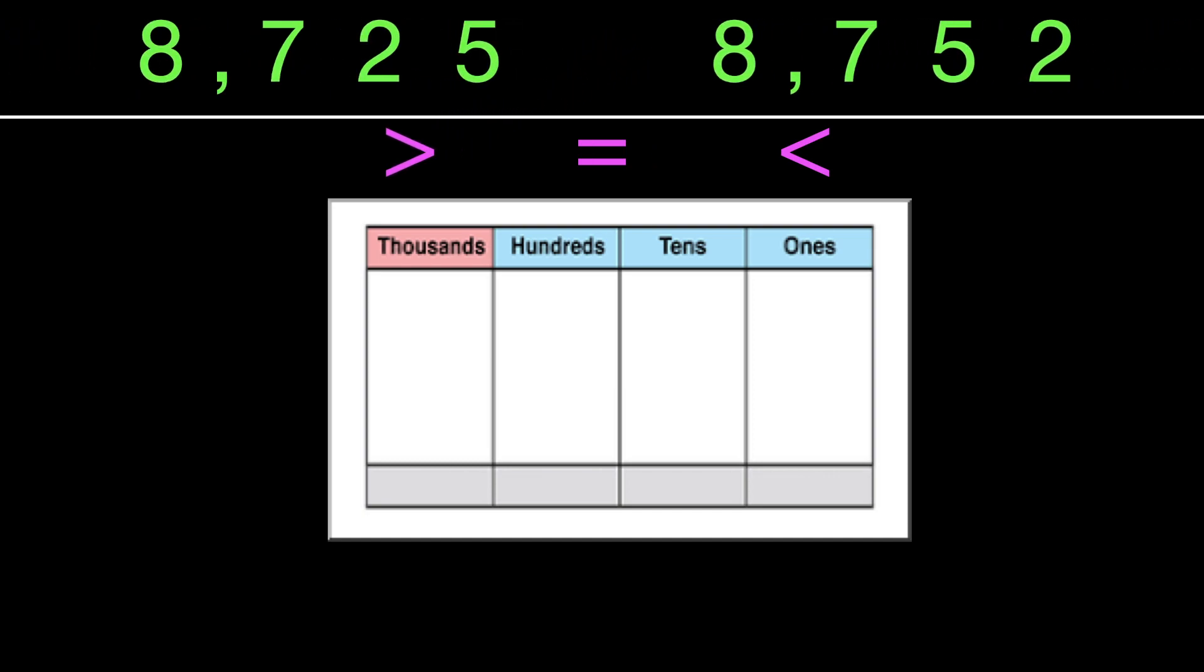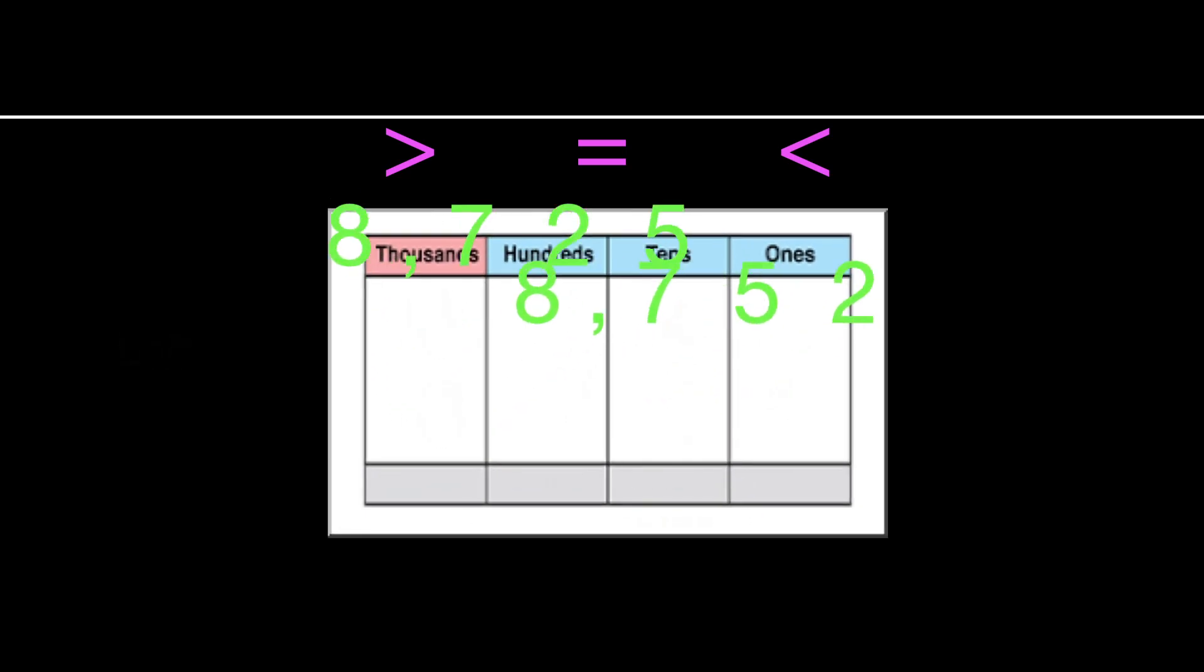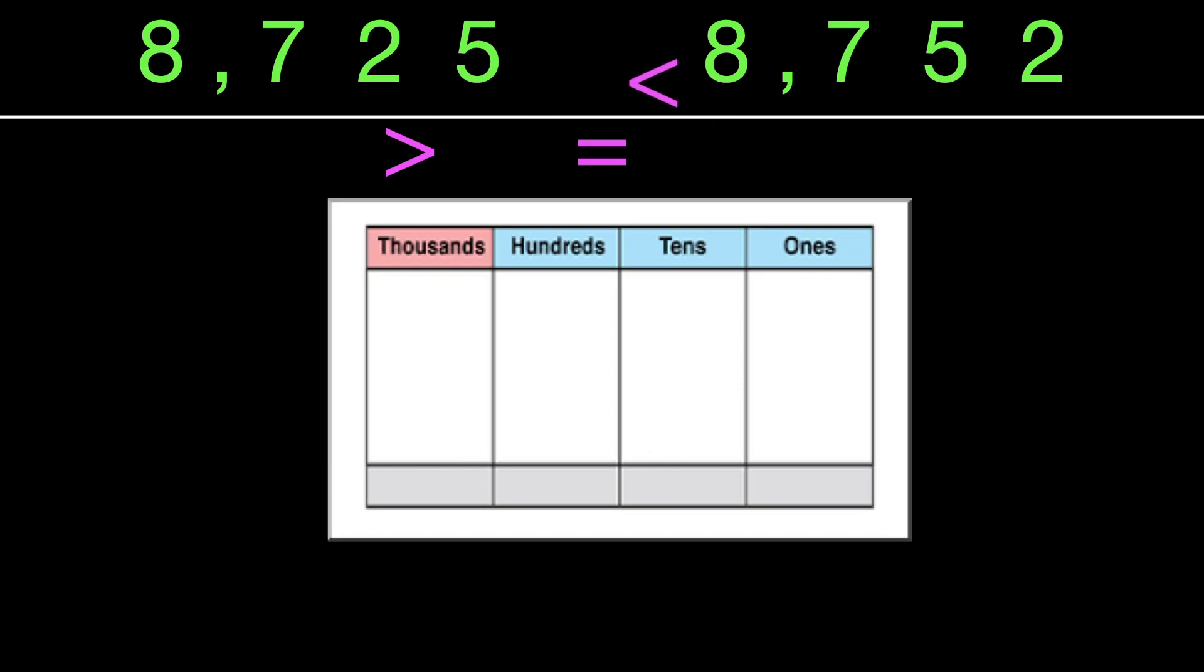So let's try another one. And we'll put that in our place value chart. This one's a little bit easier. Working from the left, we just check our thousands, and those are equal, and our hundreds are also equal. But when you get to the tens, you can see that they're not the same. The 5 is greater. That means that that entire number is greater. Make sure we put the symbol in correctly. And this one reads 8,725 is less than 8,752.